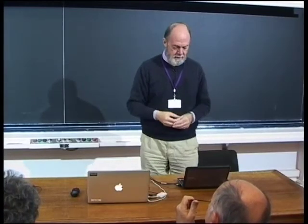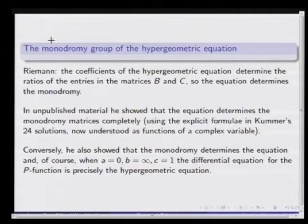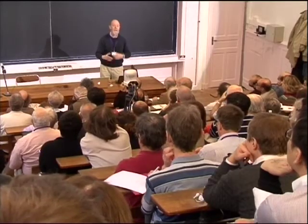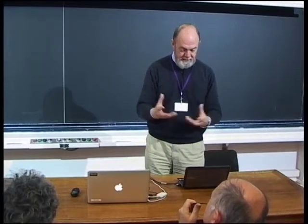A hint of what Riemann was to do with this: the branch behavior is described at each of the singular points — little a, b, c — by a matrix. He now wants to take his basis of solutions around one branch point and carry it around another and see what he gets. He gets more matrices, and he satisfies himself that the coefficients of the hypergeometric equation in this case determine all the entries in all of the matrices. So the differential equation determines precisely the monodromy of the solutions. Then he reverses the argument in unpublished material and shows that the equation determines the matrices completely, not just the ratio of the coefficients.